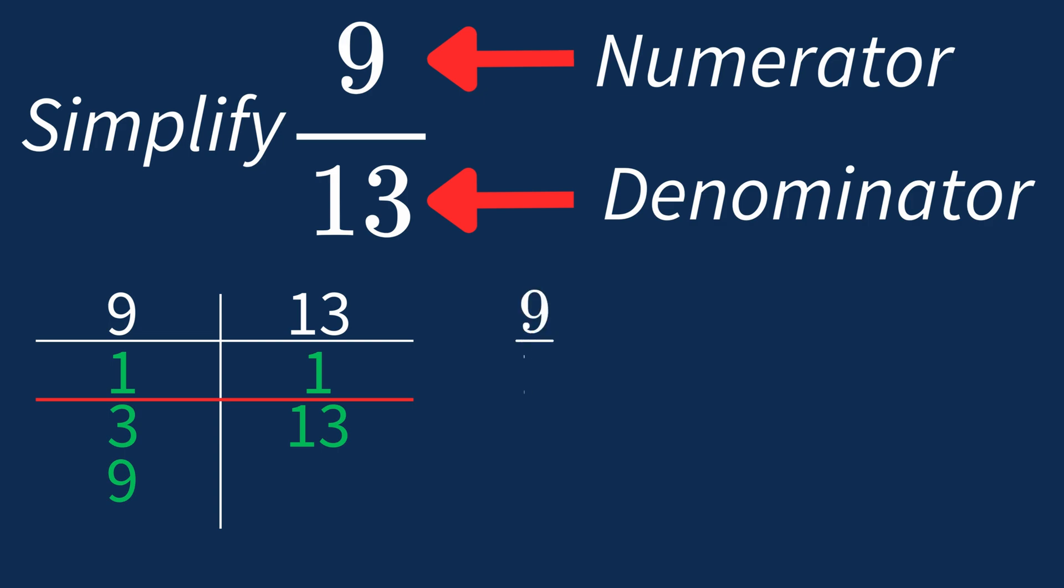Dividing the numerator 9 by 1 gives us 9. Dividing the denominator 13 by 1 gives us 13.